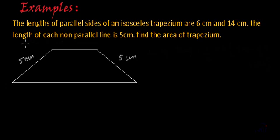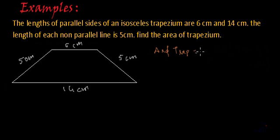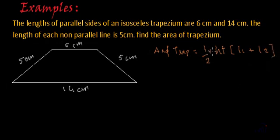Among the other lengths, one parallel side is 6 centimeters and the other is 14 centimeters. We have to find the area of the trapezium. The area of a trapezium is equal to 1/2 times the height multiplied by the sum of the lengths of the two parallel sides. If L1 is 6 centimeters and L2 is 14 centimeters, we still need to find the height, which we don't know yet.